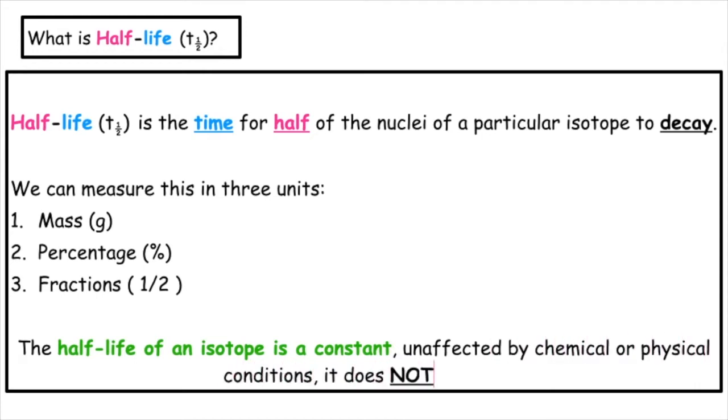The half-life of an isotope is a constant. It is unaffected by any chemical or physical conditions. It does not change.